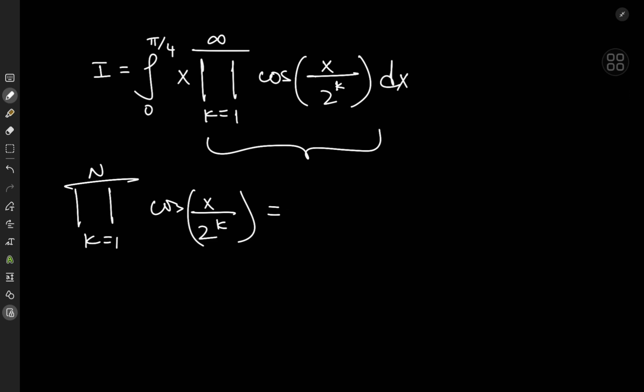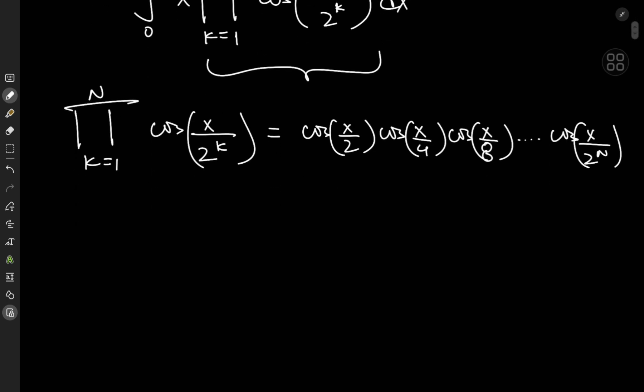So expanding the product gives me cosine of x by 2 times the cosine of x by 4 times the cosine of x by 8, and so on and so forth, and it stops at cosine of x by 2 to the n. So it doesn't look like I have any patterns here. But what if I could convert the right-hand side into some kind of telescoping product? And what does that even mean?